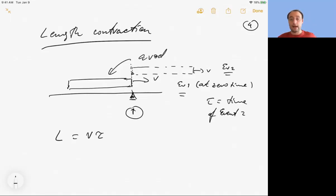Now, why do I write tau? Why am I using the letter tau? Because the two events happen at the same location in this frame. So the time interval measured in this frame is a proper time. So this is frame S.